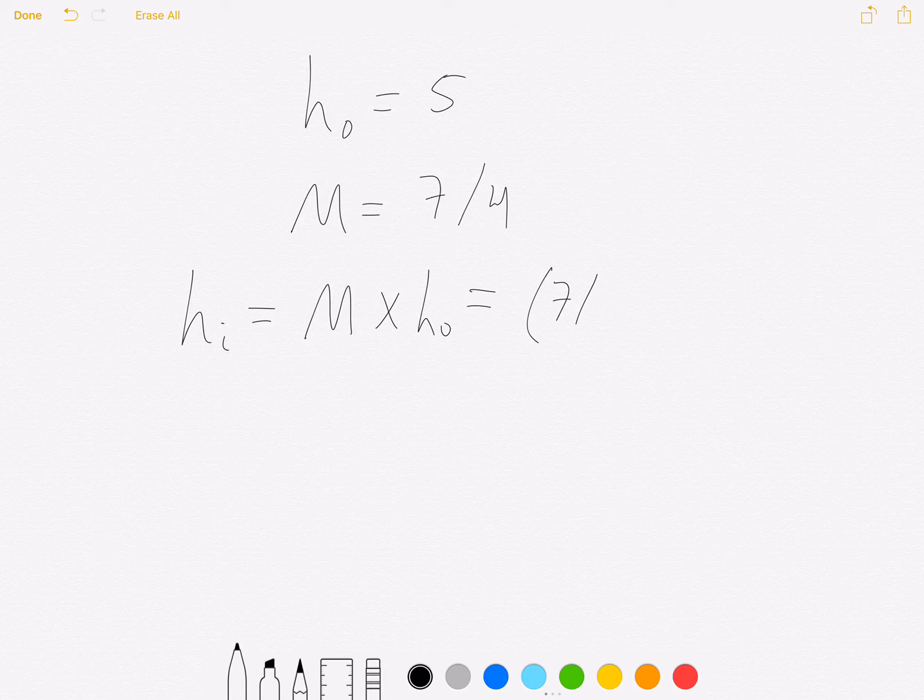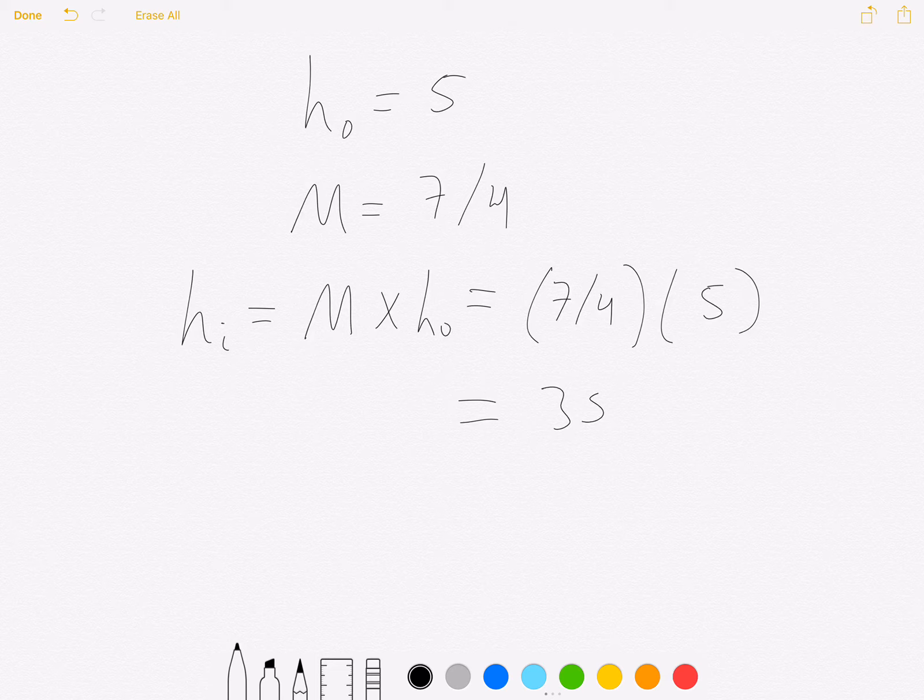And all we need to do is multiply these two things together: 7/4 times 5, which will give us 35 over 4, because we multiply the numerators and the denominator for 5 is just 1, so 4 times 1 gives us 4.